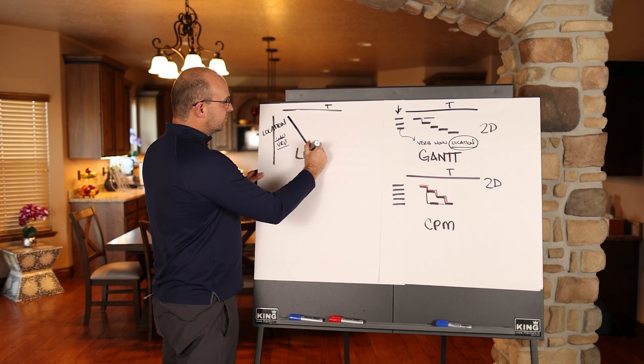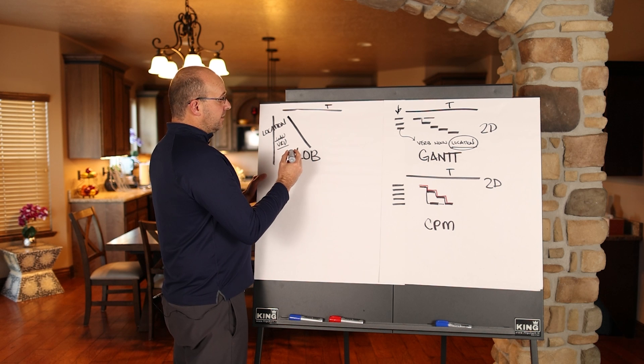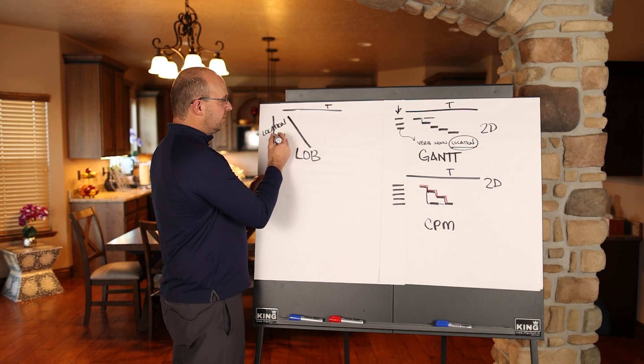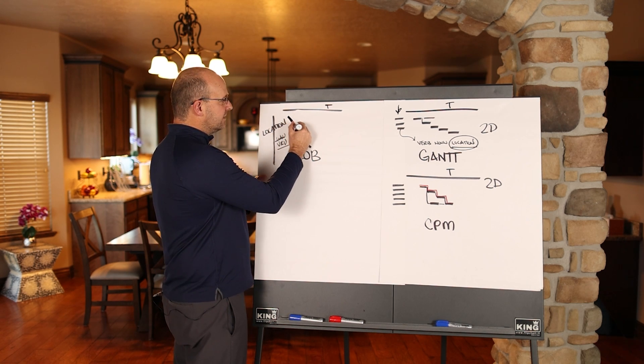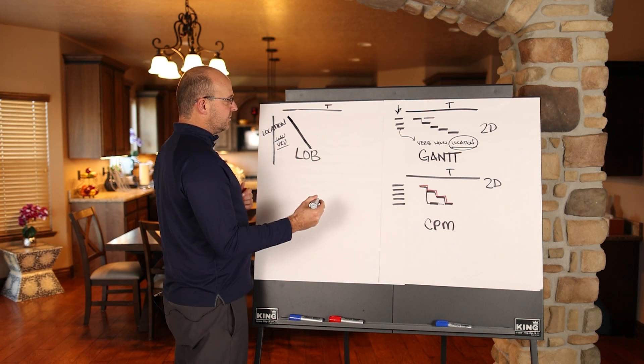But either way, in construction, the line of balance method shows in relation to time and location, how fast you can produce something with that specific resource.